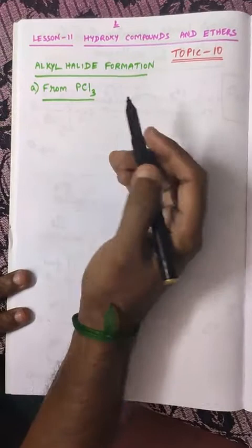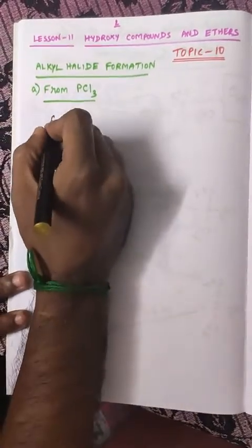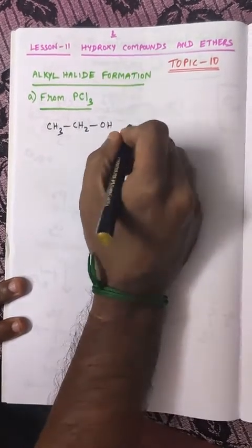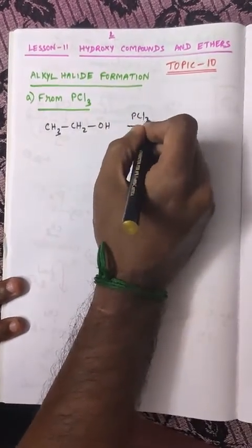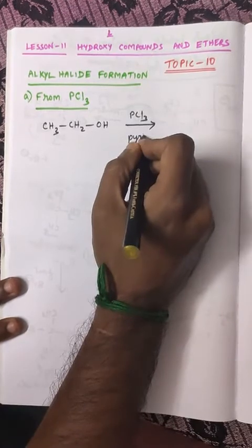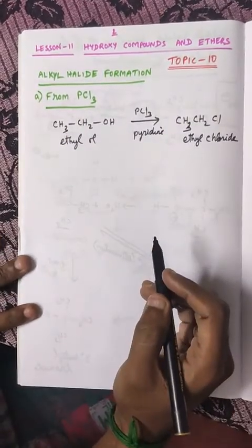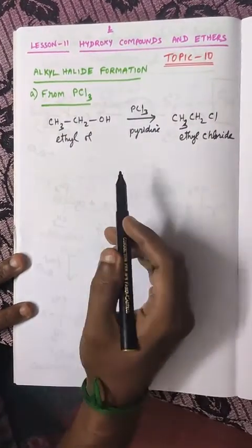From PCL3, how to prepare alkyl halide? I am going to take ethyl alcohol, CH3-CH2-OH, when it is treated with PCL3 in presence of pyridine. It will give ethyl chloride as the product: CH3-CH2-Cl. This is the general reaction.